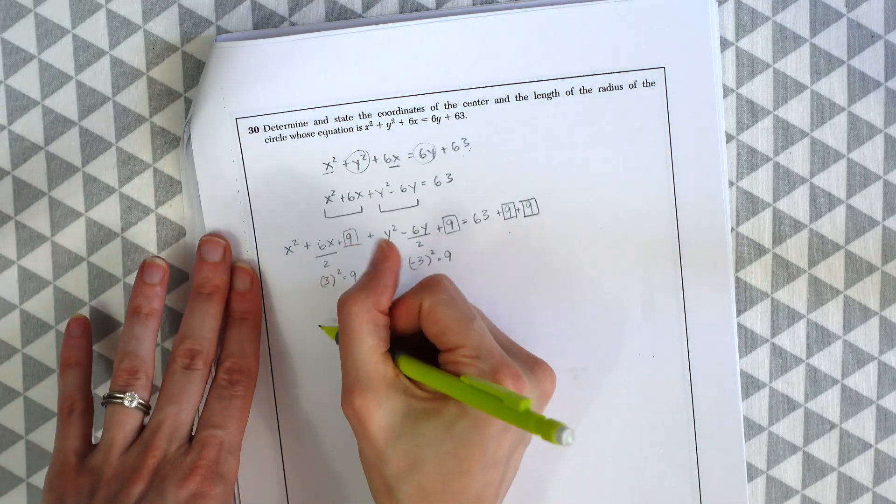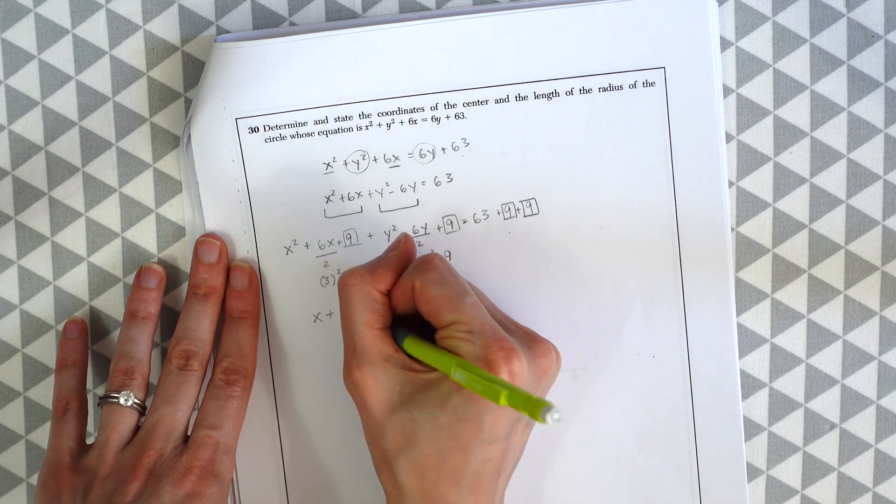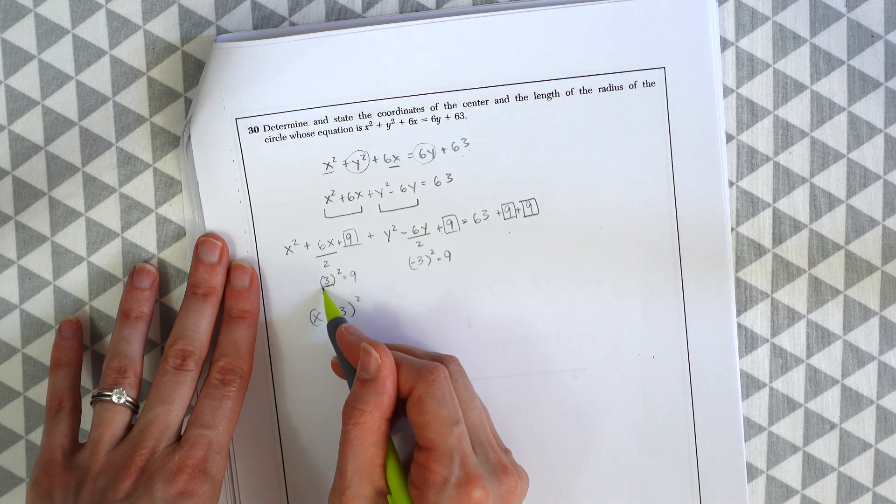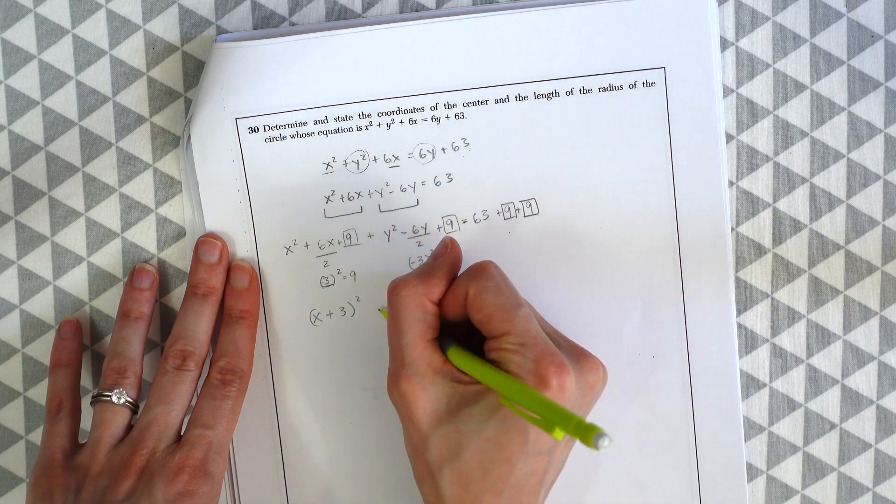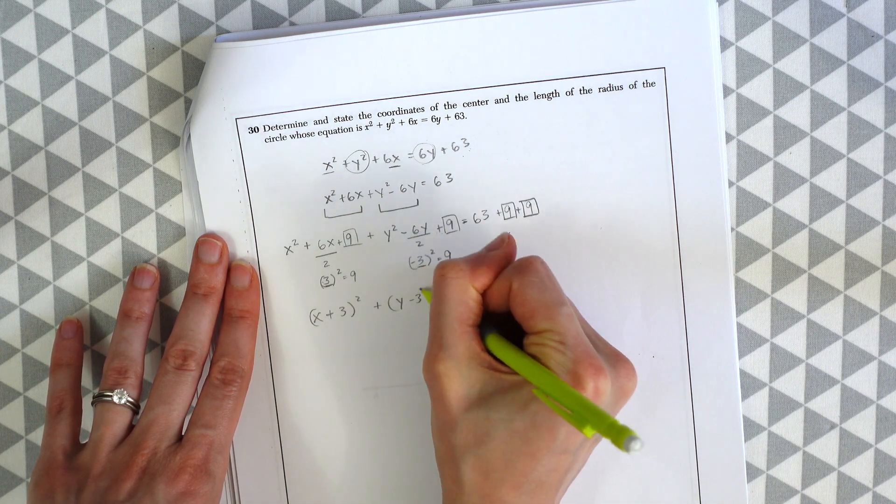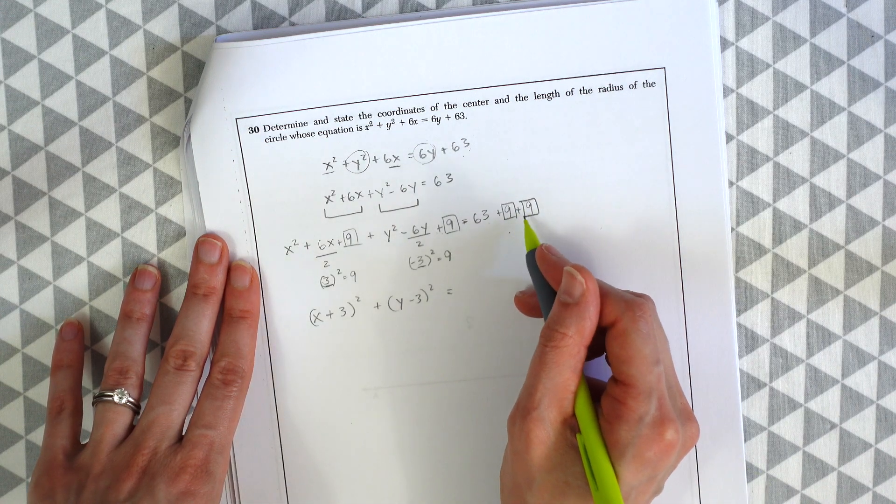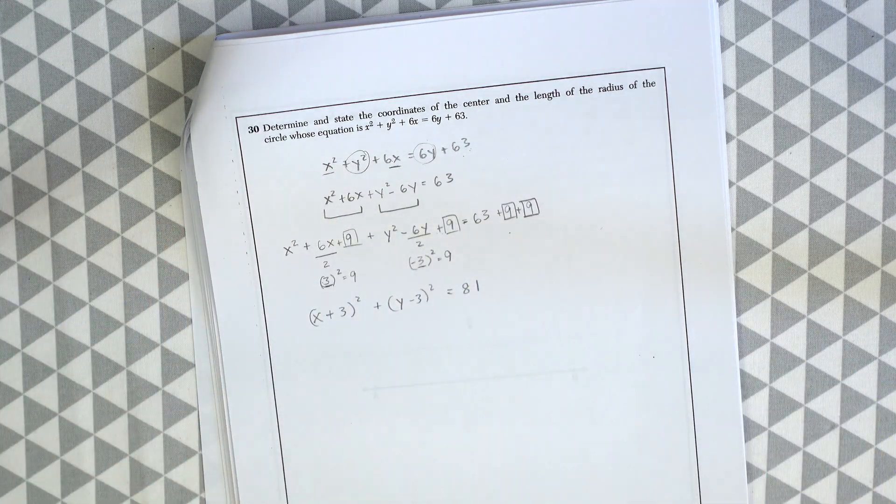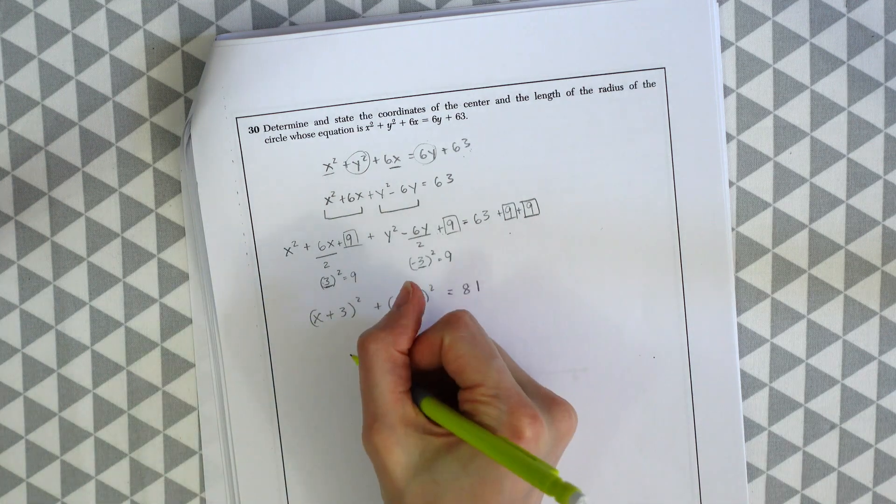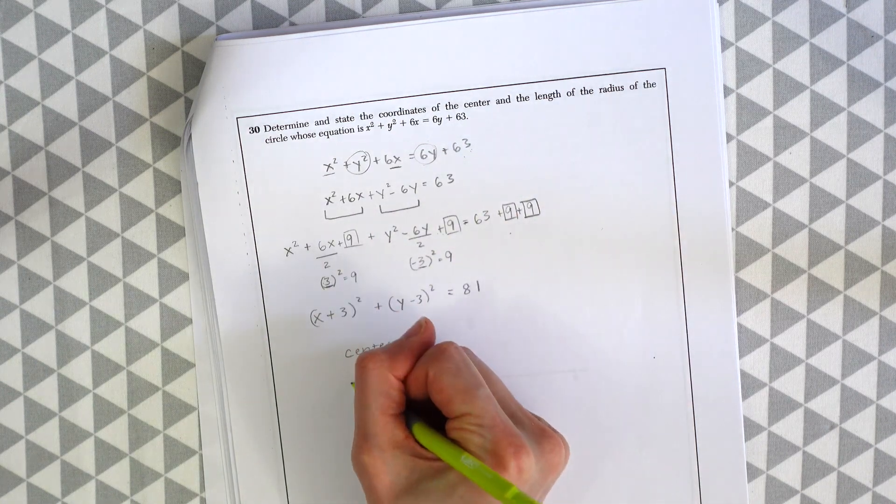So now our next step is we're going to rewrite our little x value group to x plus 3 squared. We got the 3 from right here. This is what we just found. Plus y. We're gonna look at the same number on this side which is a minus 3 squared. And then we're gonna add these all together. 63 plus 9 plus 9 will give us 81. So we're almost done. We completed the square which is good. And now we just need to look at this and find the center and radius of our circle.